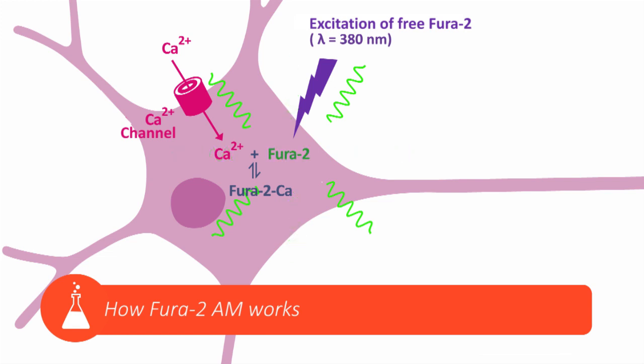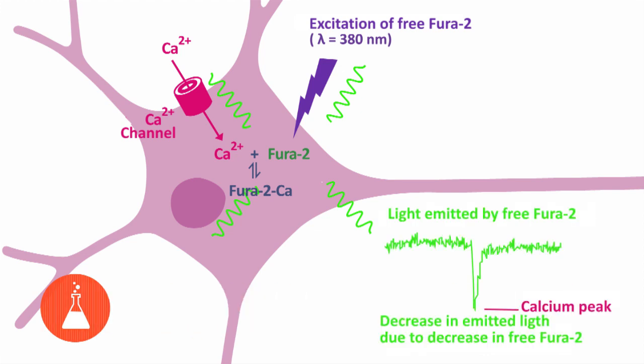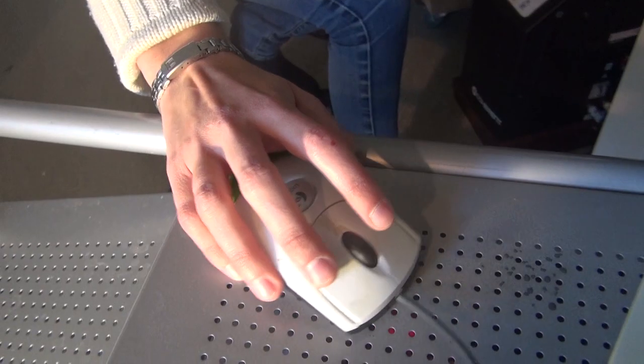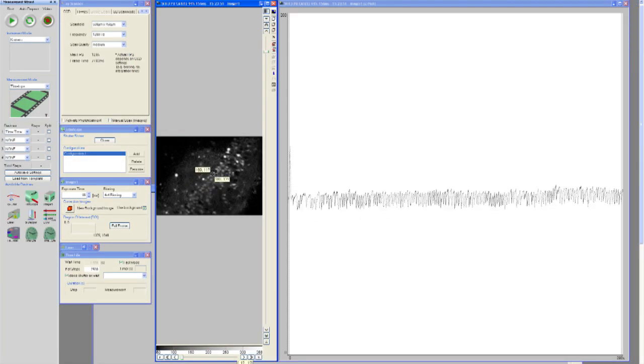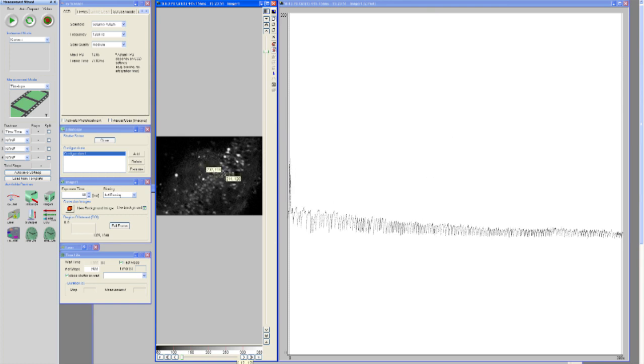When we excite the FURA-2 molecule with this laser, we record variations in the fluorescence produced by this molecule that depend on whether or not it is bound to calcium. A recording of these variations in fluorescence in every neuron in the field, both in space and time, is an indirect reflection of neuronal activity.